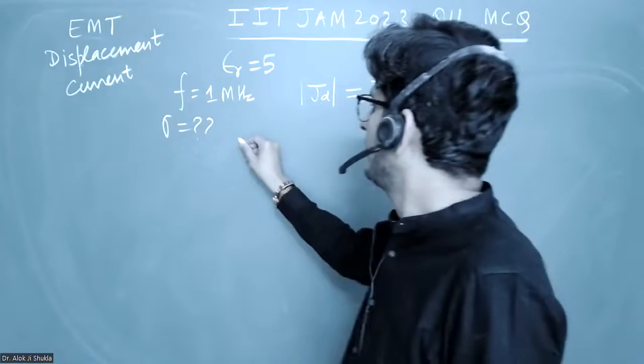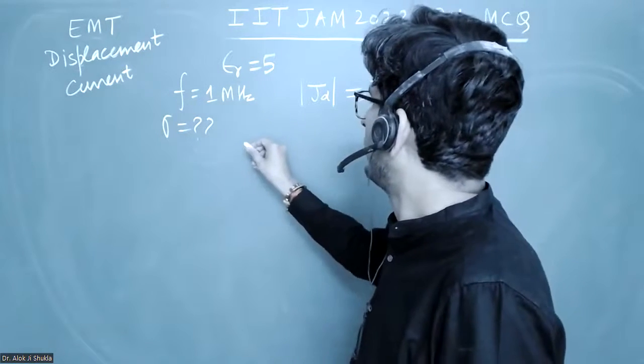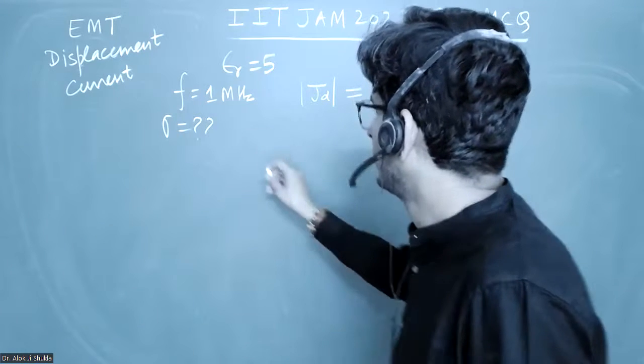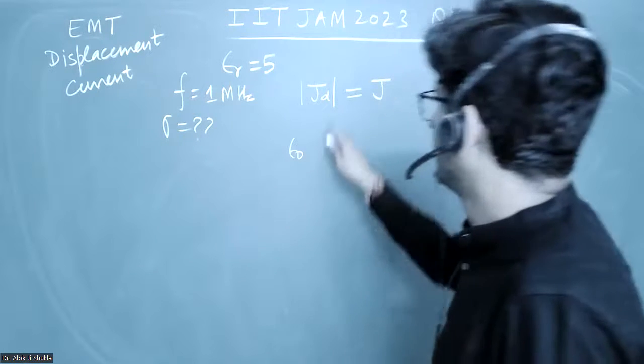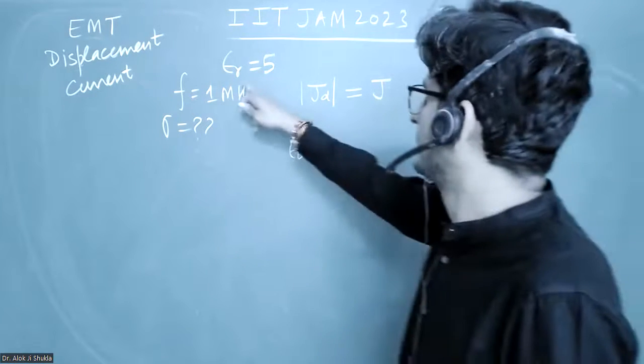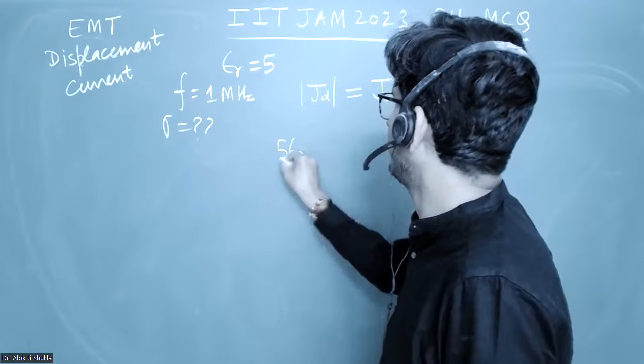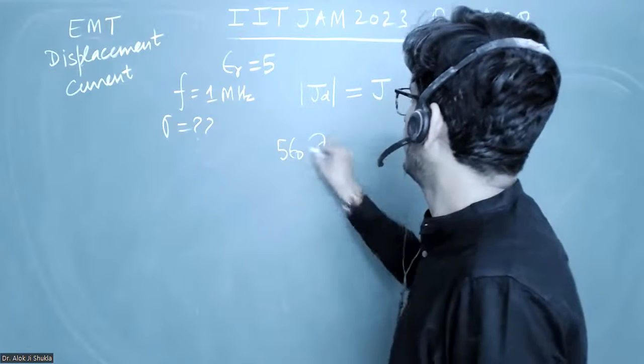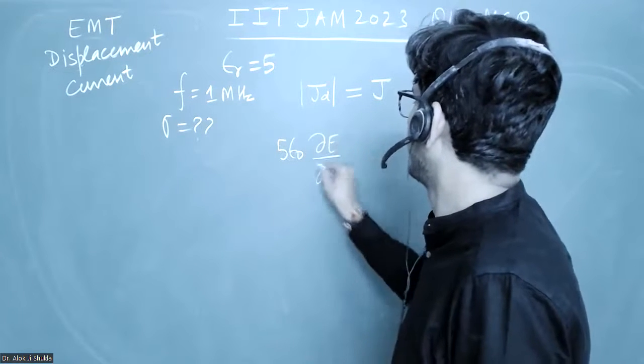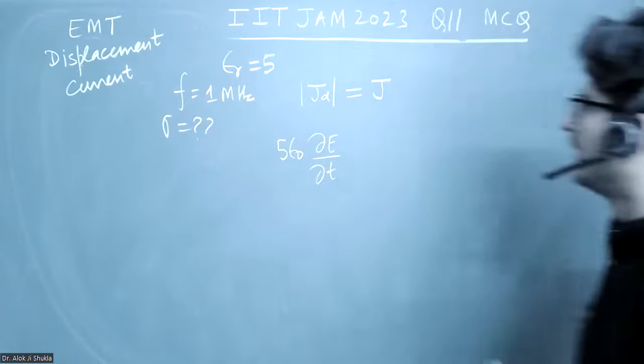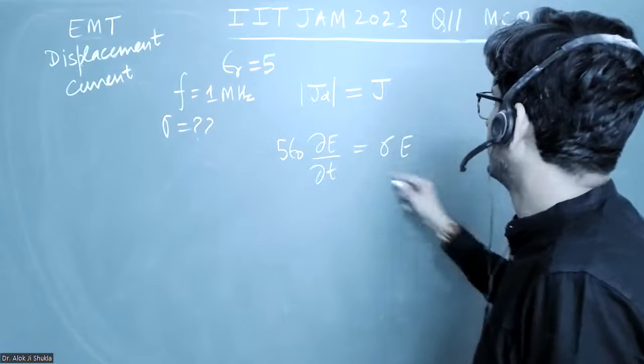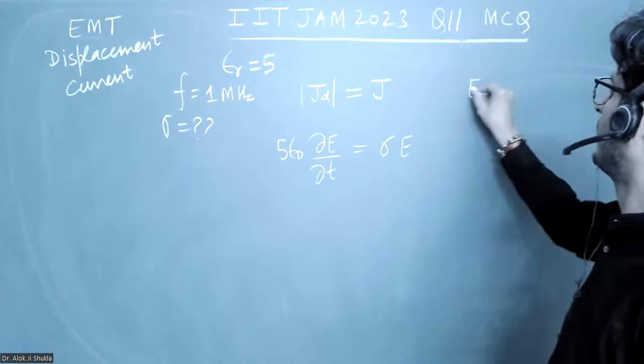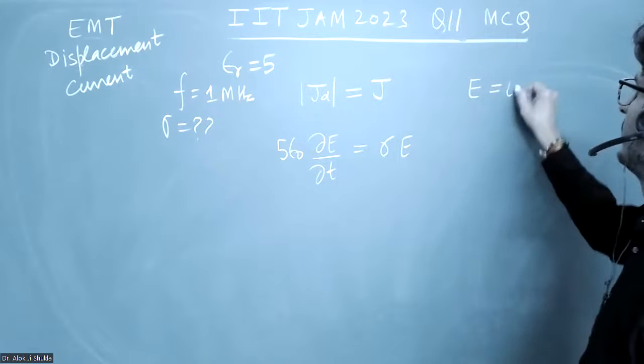Let me take a profile of voltage. The JD will be given by ε₀, and this 5 is also there, so 5ε₀ dE/dt. And j will be equal to σE. If I take the profile of the oscillating electric field equal to